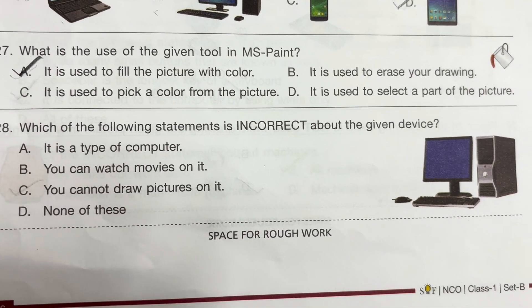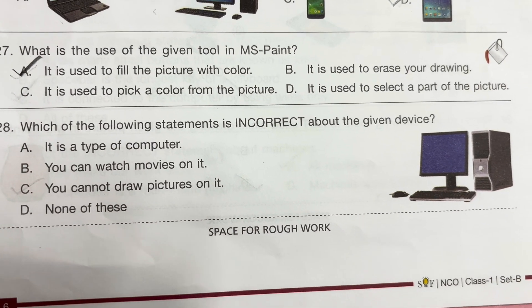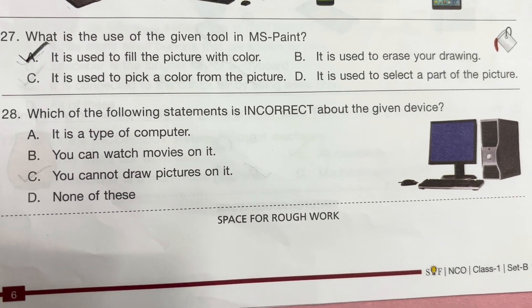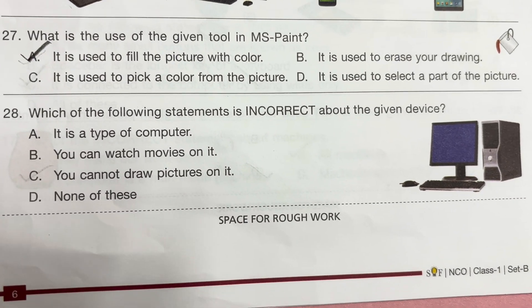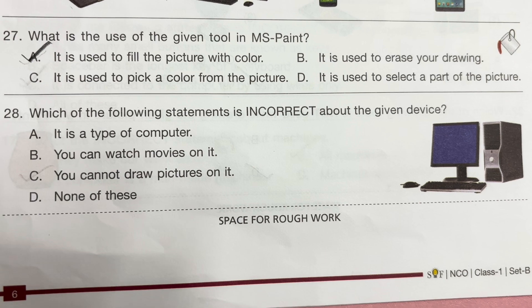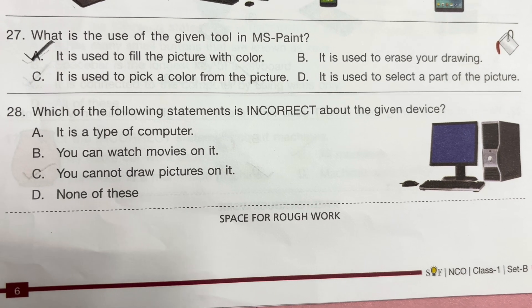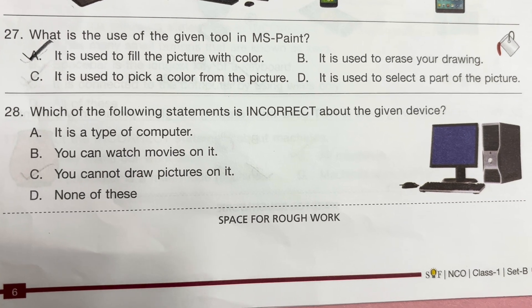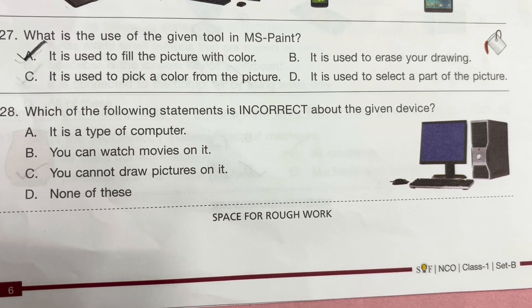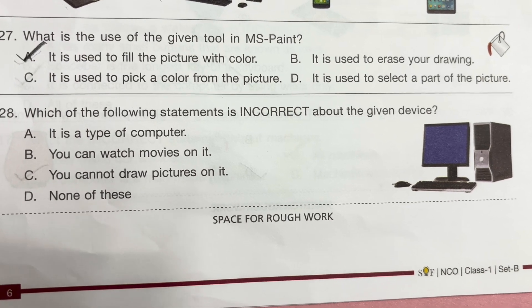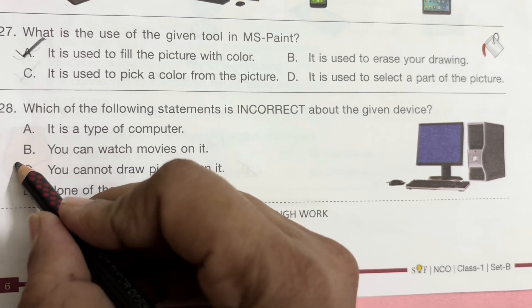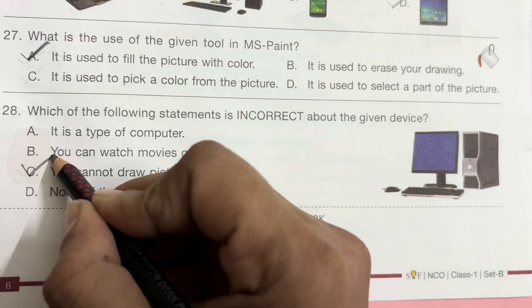Question 28: Which of the following statements is incorrect about the given device? This is a desktop computer. Option A: It is a type of computer — correct. Option B: You can watch movies on it — correct. Option C: You cannot draw a picture on it — incorrect, we can draw pictures. So the incorrect statement is C.